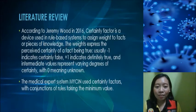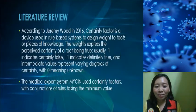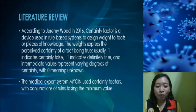According to Jeremy Wood in 2016, a certainty factor is a device used in rule-based systems to assign weight to facts or pieces of knowledge. It expresses the perceived certainty of a fact being true — usually negative one indicates certainly false, positive one indicates definitely true, and intermediate values represent varying degrees of certainty, with zero meaning unknown. The medical expert system MYCIN uses certainty factors in conjunction with rules, taking the minimum value.